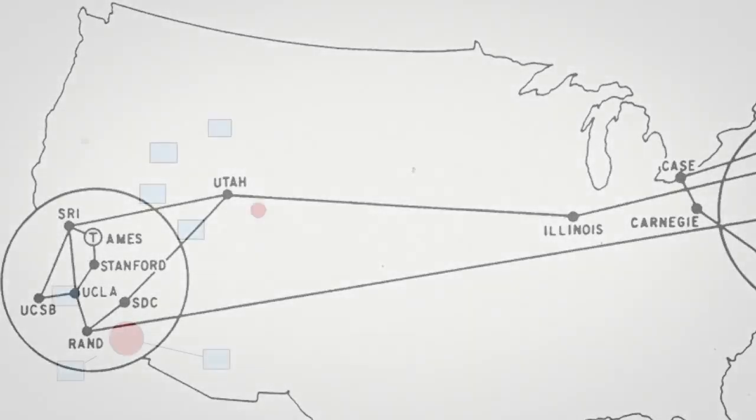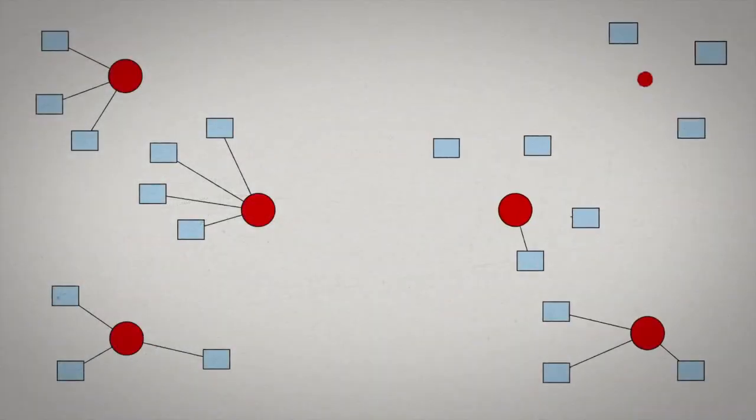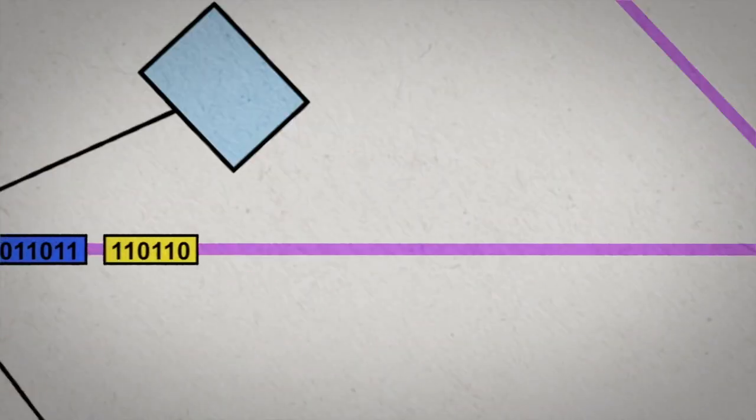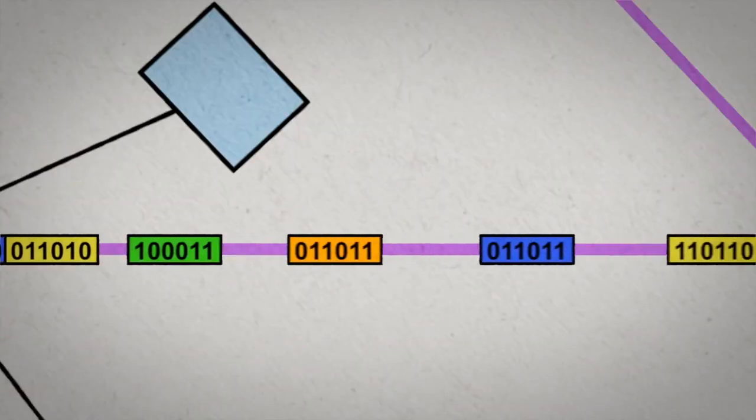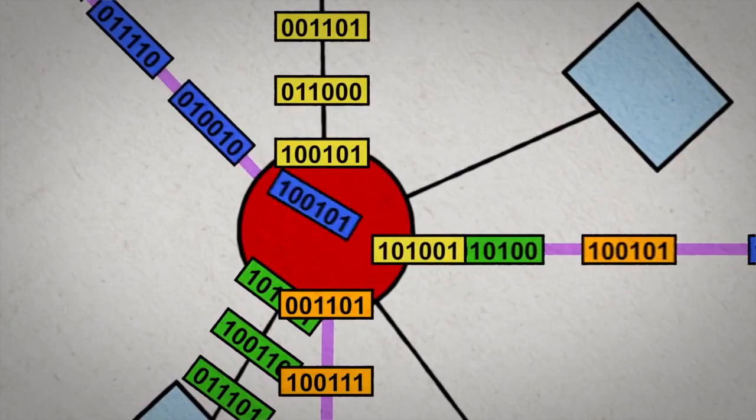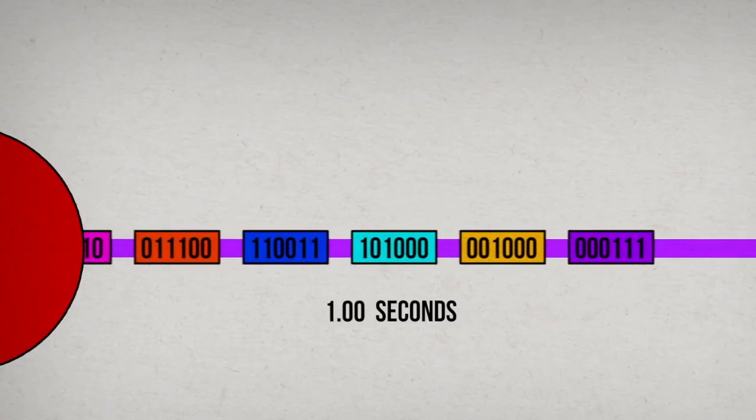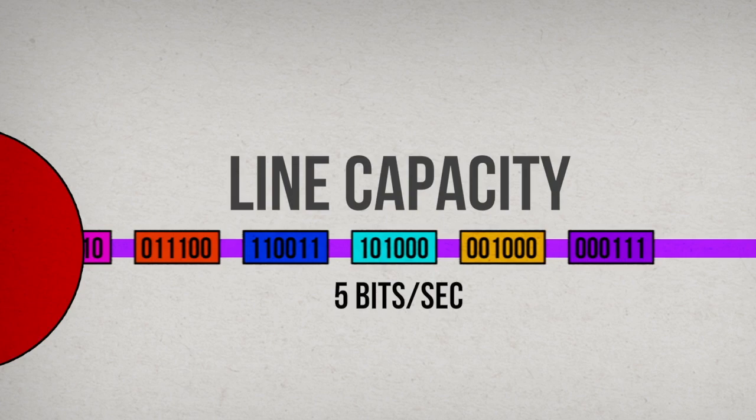New cities were connected to hubs, and those hubs were all connected to each other. So more and more digital data needed to get squeezed down these long-distance lines. But there is a fundamental limit to how many bits you can squeeze down any line per second. This limit is known as the line capacity, or bandwidth.